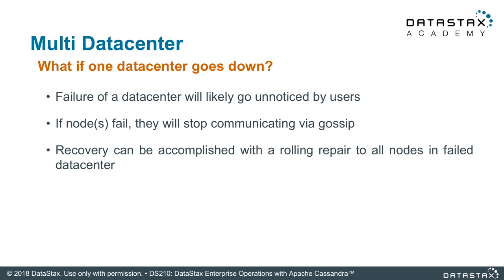What happens if a data center goes down? Hopefully not a lot. If you built your application around the expectation for a data center to go down, then the other data center should compensate — that is the way you build a good topology and good applications. You're expecting failure at different scales: a node goes down, a data center goes down, you should be online. At a cluster level, gossip will notice those nodes are no longer online and will start storing hints waiting for that data center to come back online. Once it does, those hints get replayed. You may have to run a repair if you go beyond GC Grace, but it should be an online operation for your users.